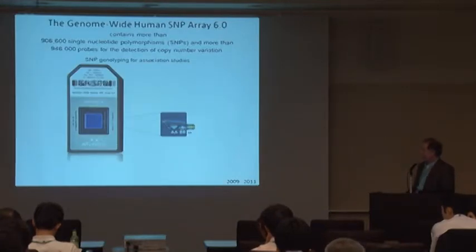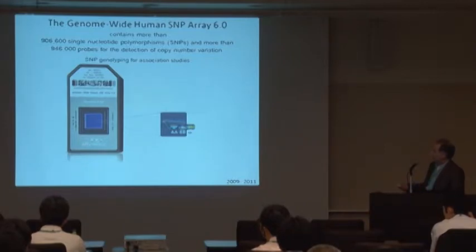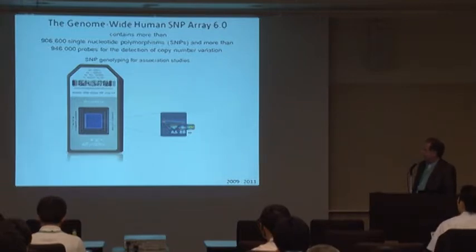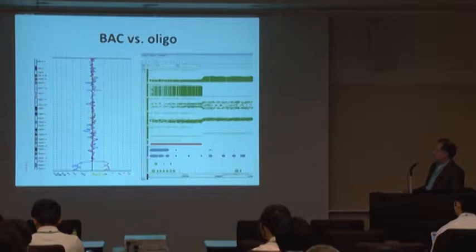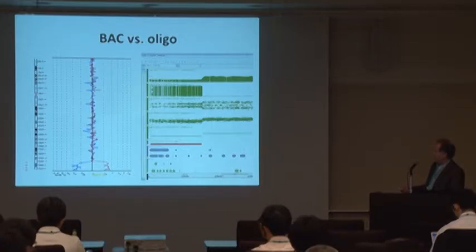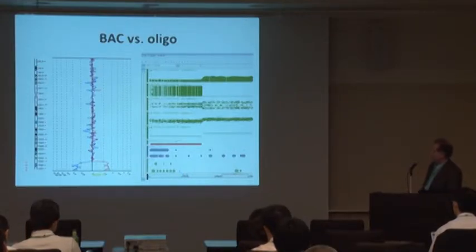So in 2009 we switched to the Affymetrix 6.0 array. As you can see it has almost a million SNPs and just as many probes for copy number variation. But one big addition was this SNP genotyping which the BAC arrays did not have. So we ran with that for quite a while clinically for two years. This is just a screenshot of the difference in what the data looks like. The 6.0 array definitely has more information that's beneficial to everyone involved. It helps you with your breakpoint delineation, has LOH calls, and has SNP corroboration for your CNV calls.